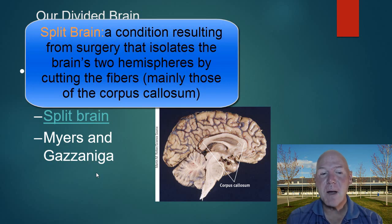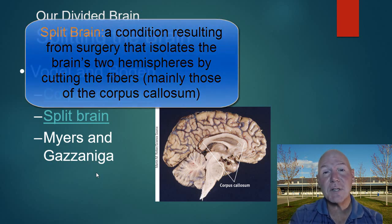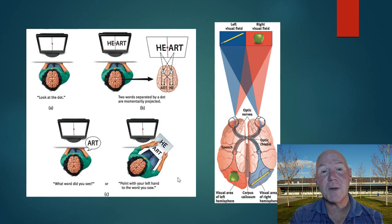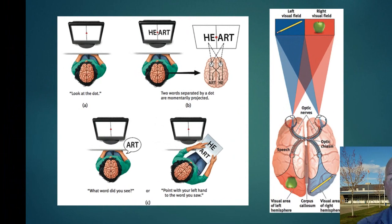Myers and Gazzaniga were two researchers who studied interesting phenomena in split-brain patients. In one experiment, a patient sits in front of a screen, stares at a dot in the center, and the word 'heart' is flashed — with 'he' on the left side of the dot and 'art' on the right side.